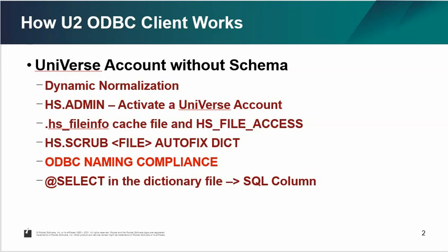Once you activate the Pick Flavor account, it will create a .HS_file_info cache file and also set up some file access controls. If you have dictionary problems, you can use the HS scrub command to update your dictionary file. ODBC also has something called ODBC naming compliance. You can read the ODBC manual for more detailed information. In the dictionary, there is one very important field called the at-select field, which describes which fields will be visible in the ODBC client.